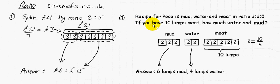And we're also told that we have 10 lumps of meat. So the last bit in the recipe is meat, and there's 10 lumps of it, how much of water and mud do you have?